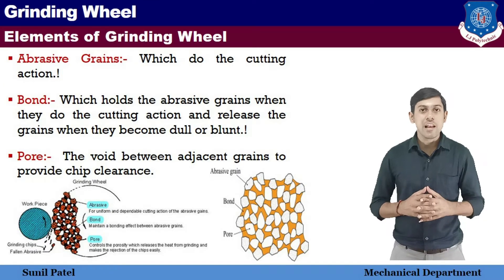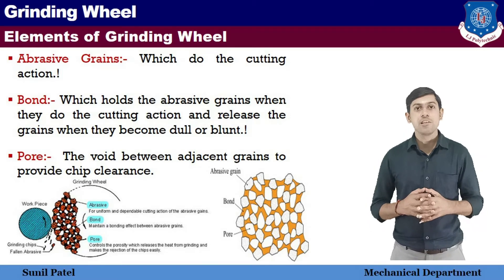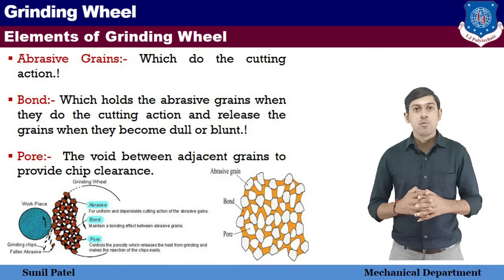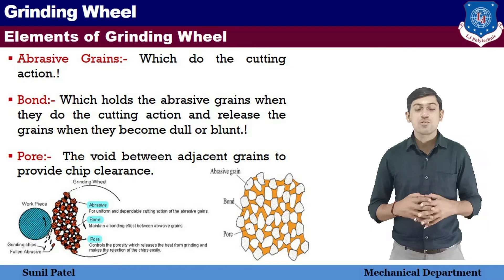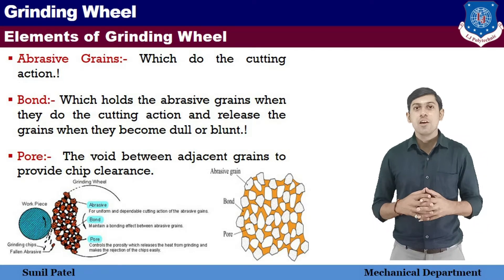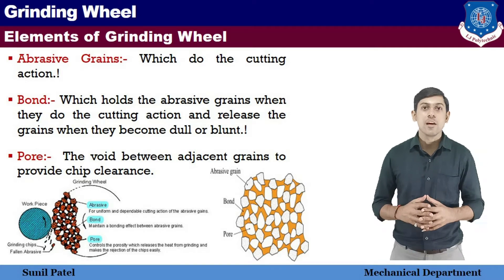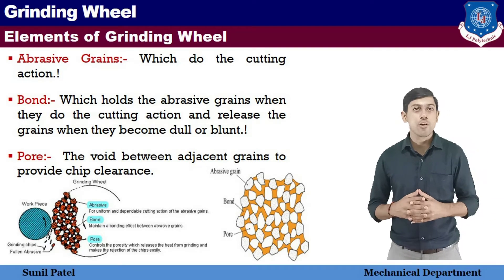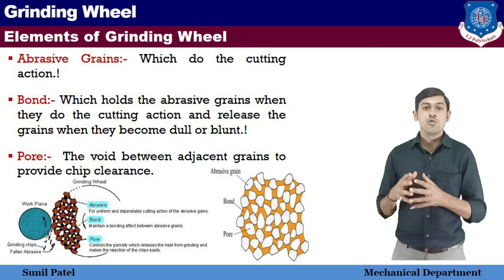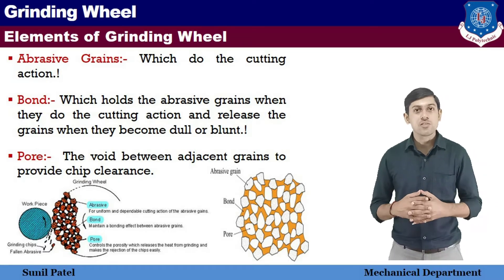There are mainly three types of elements. The first one is Abrasive Particle, the second one is Bond, and the third one is Pores. The function of Abrasive Particle is mainly cutting action to create a product. The commonly used abrasive particles available in the market are Aluminum Oxide, Silicon Carbide, and Cubic Boron Nitride.